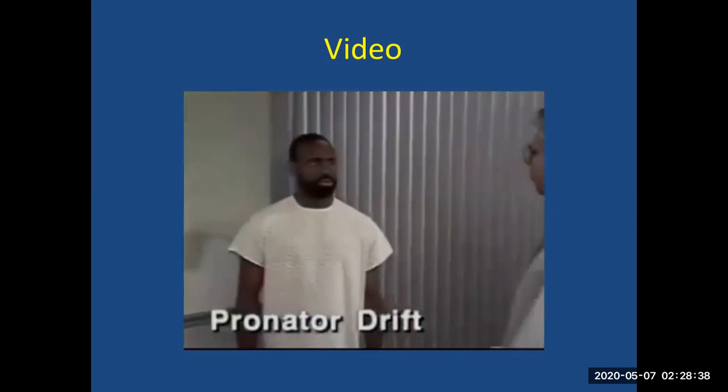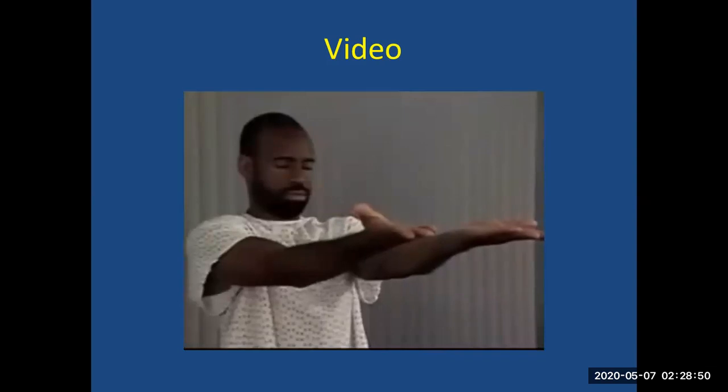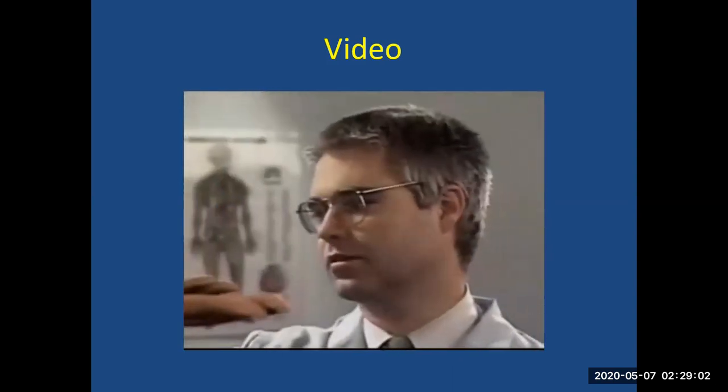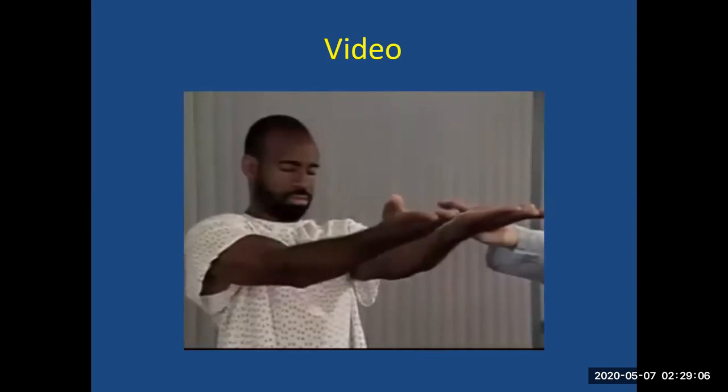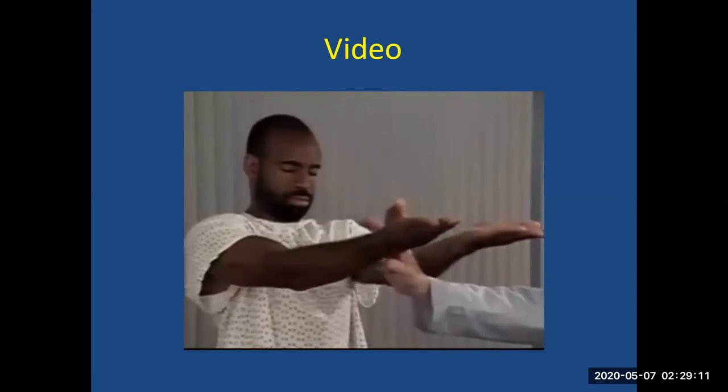Next, check for pronator drift: ask the patient to hold arms forward and parallel with palms up and close their eyes for 20 to 30 seconds. Normally the patient can maintain this position. Watch for downward drifting of one arm and pronation of the forearm, which suggest mild hemiparesis. Then ask the patient to keep arms up and eyes closed while you tap the arms briskly downward — normally the arms return smoothly to the horizontal position.